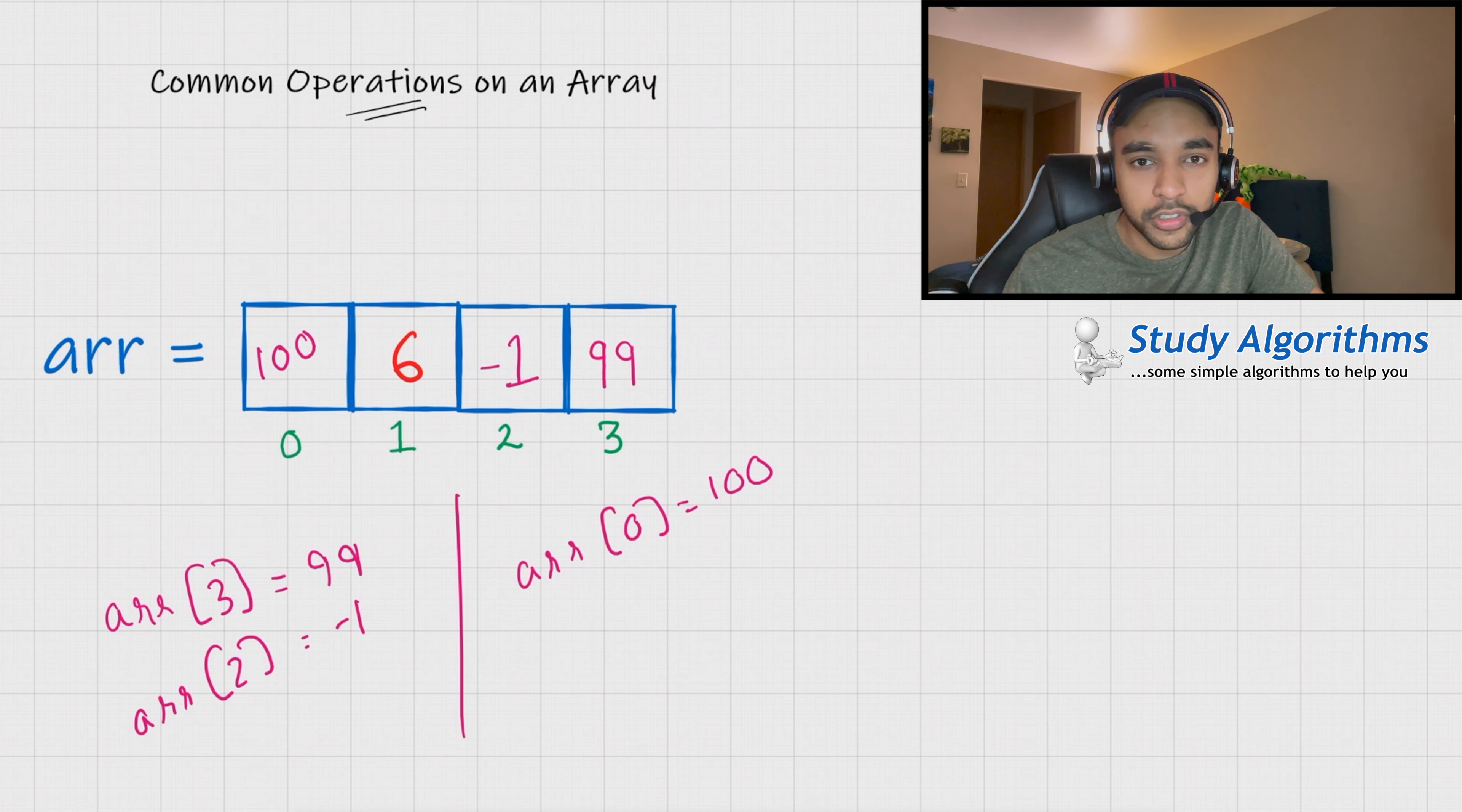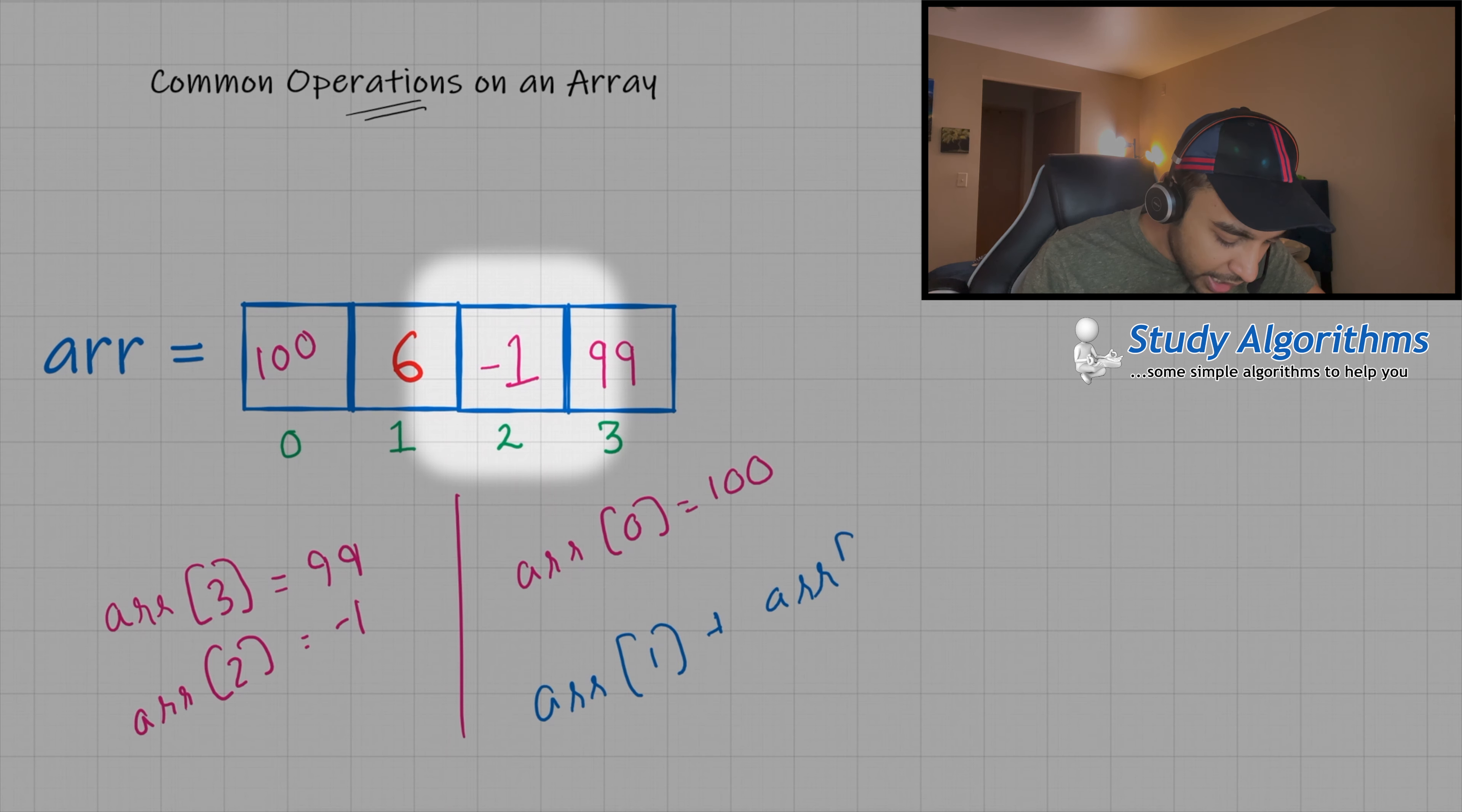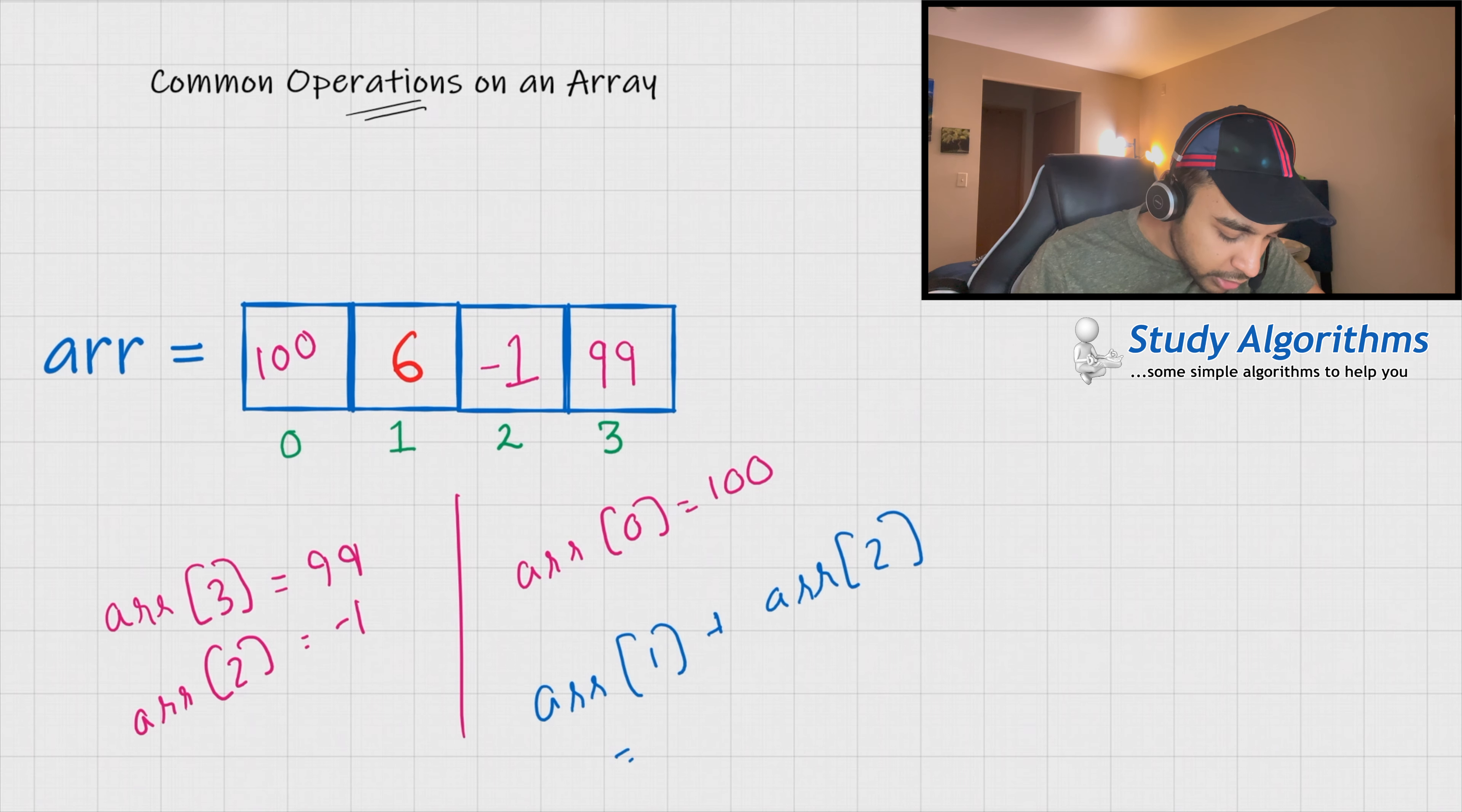You can perform all sorts of arithmetic or even string operations on this. For example, you can simply do arr at 1 plus arr at 2. So, this would translate into 6 plus of minus 1 and that would be 5. So, these are some of the common operations on arrays and how you can go about doing them.